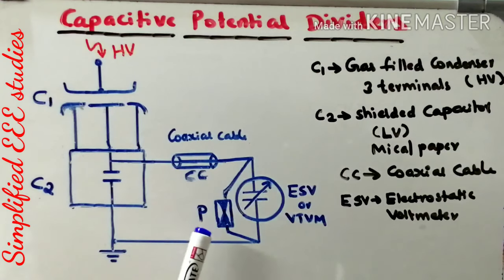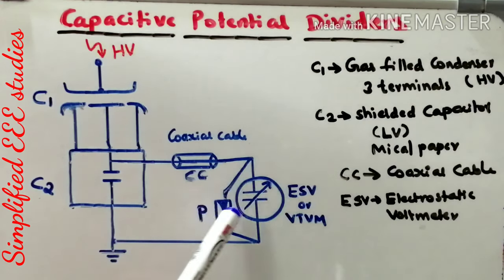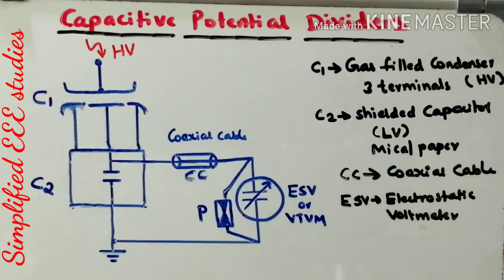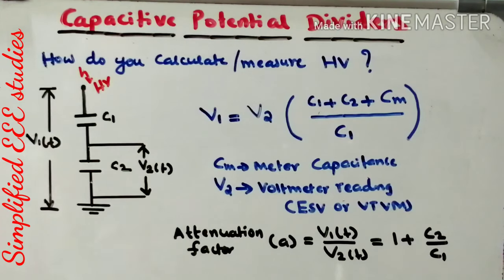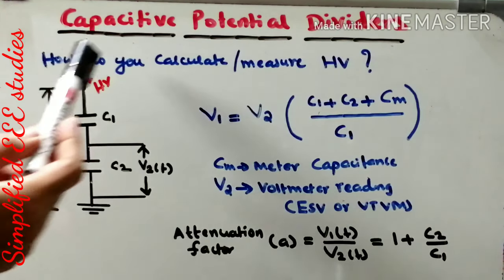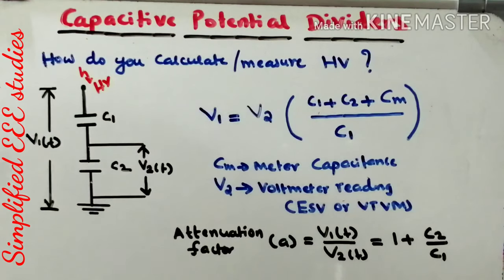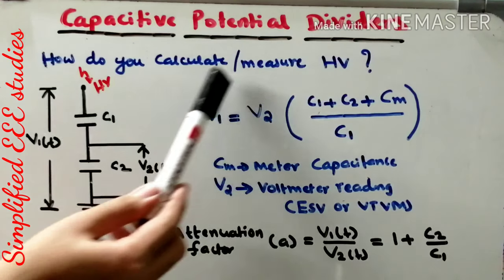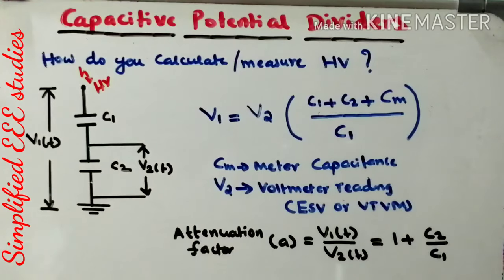There is also a protective circuit. In case any overcurrent or any problems occur, it protects the meter against overcurrent or any other unforeseen circumstances. This is the basic idea about Capacitive Potential Divider. Moving on to the next segment — let me ask you: how do you calculate or measure the high voltage which you operate externally?